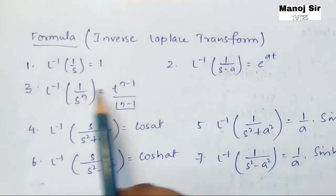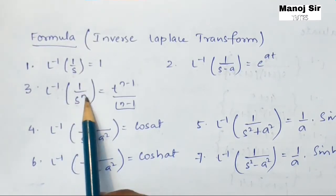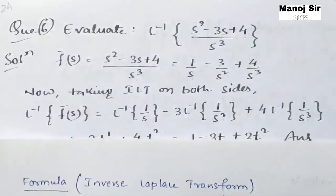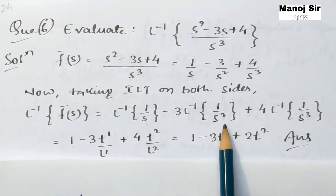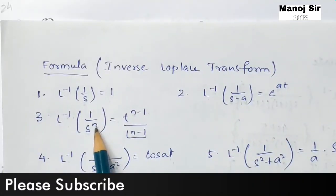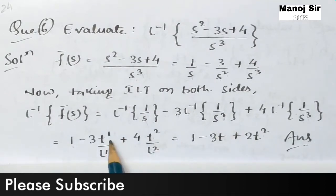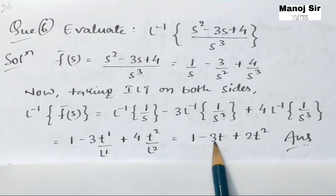For the second term, using the formula: the inverse Laplace transform of 1/s^n = t^(n-1) / (n-1)!. For 1/s², we compare and find n = 2. So the result is t^(2-1) / (2-1)! = t¹ / 1! = t / 1 = t.